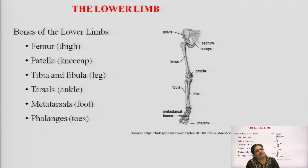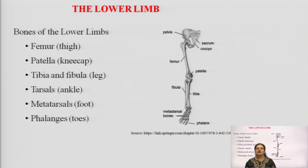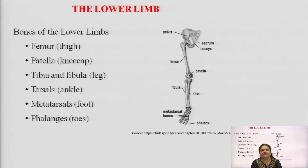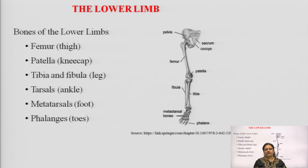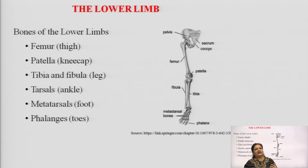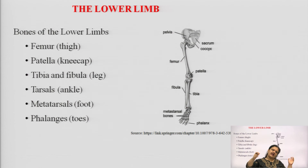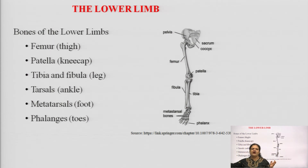Similar to the hand, in the leg we have tarsals in the ankle area — corresponding to carpals in the wrist. Then same as metacarpals and phalanges in the hand, in the leg we have metatarsals and phalanges. Phalanges in the leg are the toe bones. This diagram shows the pelvis and pelvic girdle, the inverted triangular sacrum, the coccyx, then the femur, the kneecap or patella, and then the fibula and tibia.